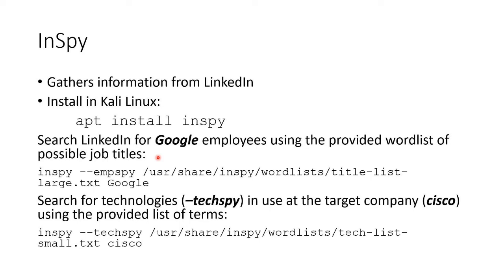InSpy has two parts: EmpSpy and TechSpy. With EmpSpy, you give a list of possible job titles and it finds people who match. With TechSpy, you give a list of technologies by title — like Cisco, Microsoft, Server 2016 — and it searches LinkedIn to find out what technologies a company uses. You can see the examples here: you just run InSpy with either EmpSpy or TechSpy, then provide a path to where the list is.